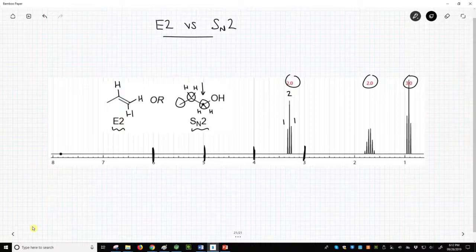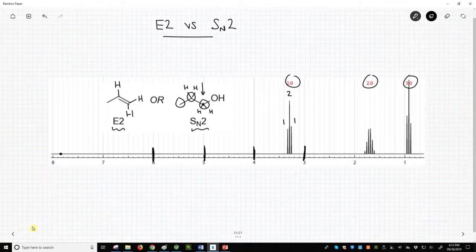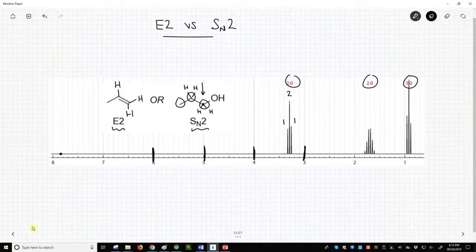One final comment. It is a bit unsatisfactory that the spectrum is missing the OH, so let's add it. Alcohols appear somewhere in the 1 to 5 range. Let's drop it in at just under 3 ppm. It should have an integration of 1.